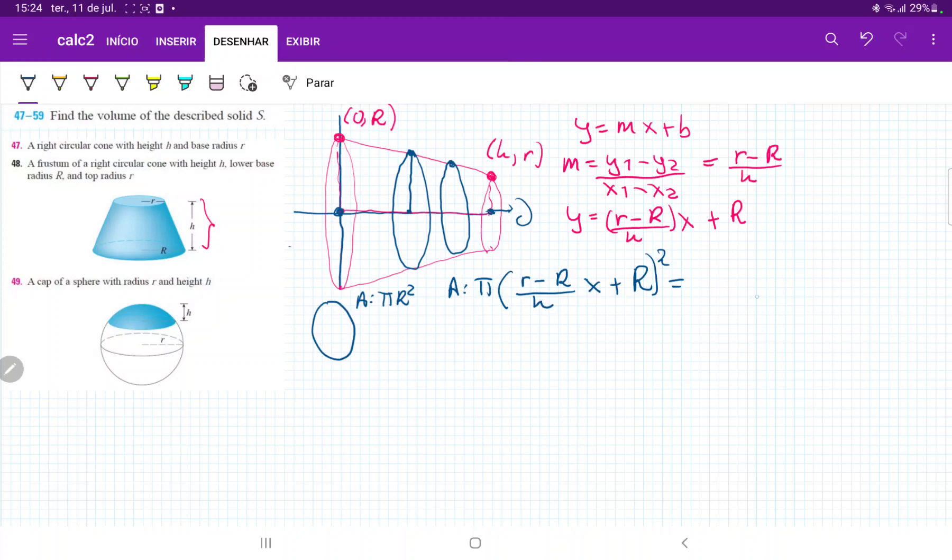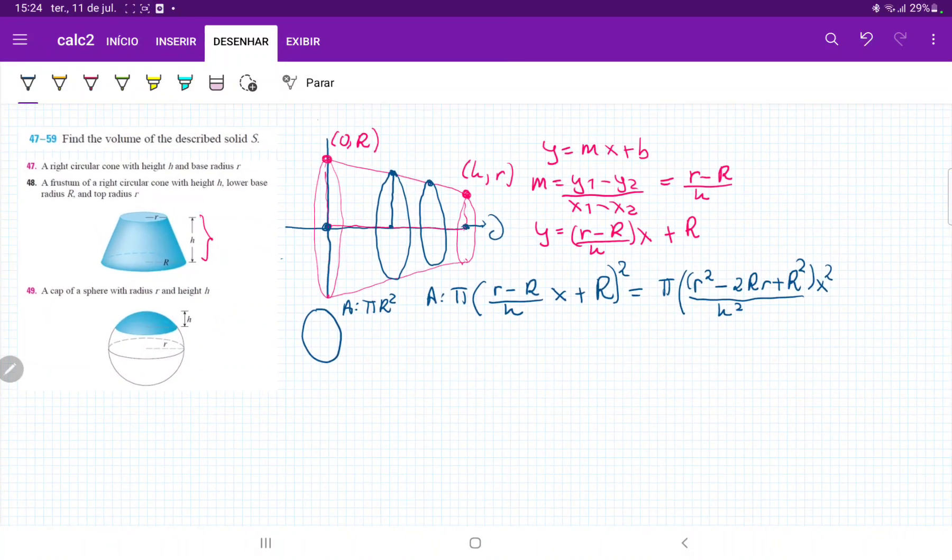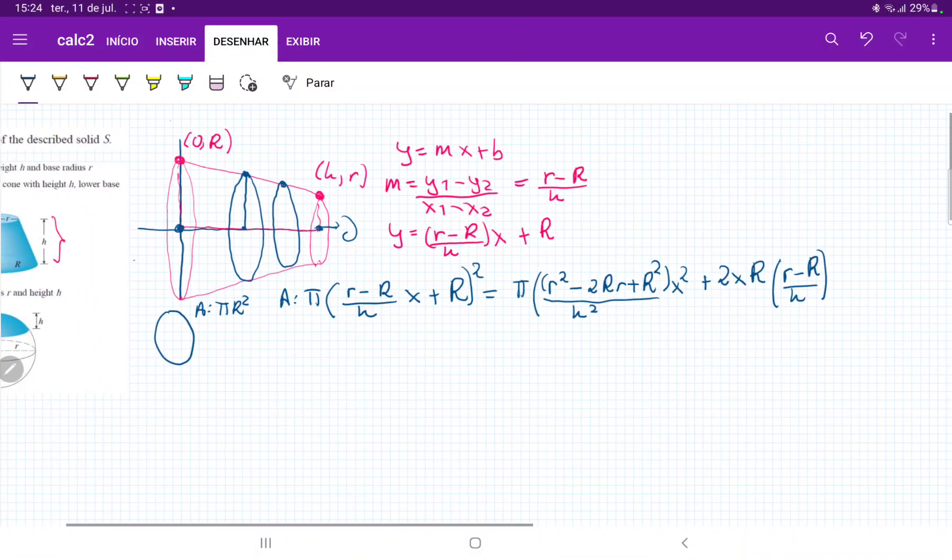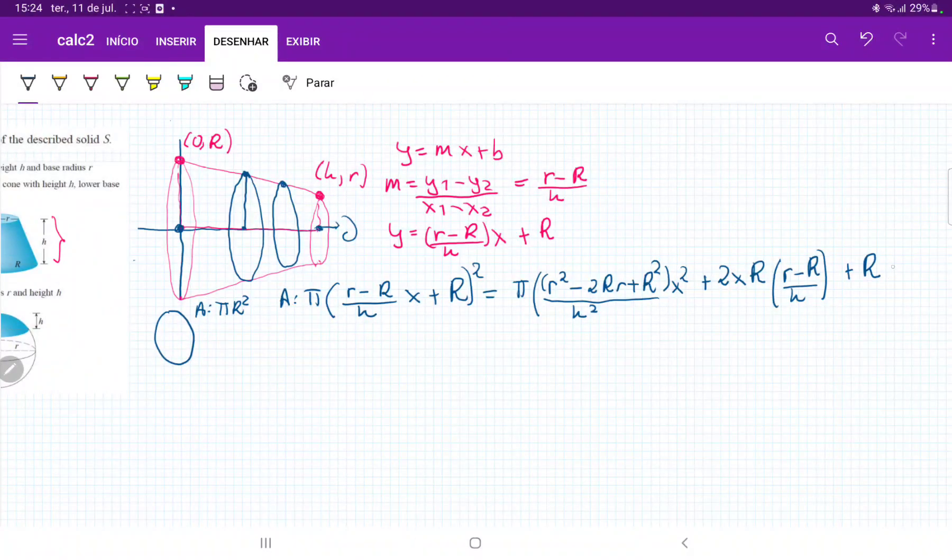So we have little r minus capital R over h, x plus capital R squared. So when we square this, let's FOIL this out, this is going to be pi times little r squared minus 2 capital R little r plus R squared over h squared. All of this times x squared, and then plus 2x capital R times this stuff, times r minus R over h, and then plus R squared.